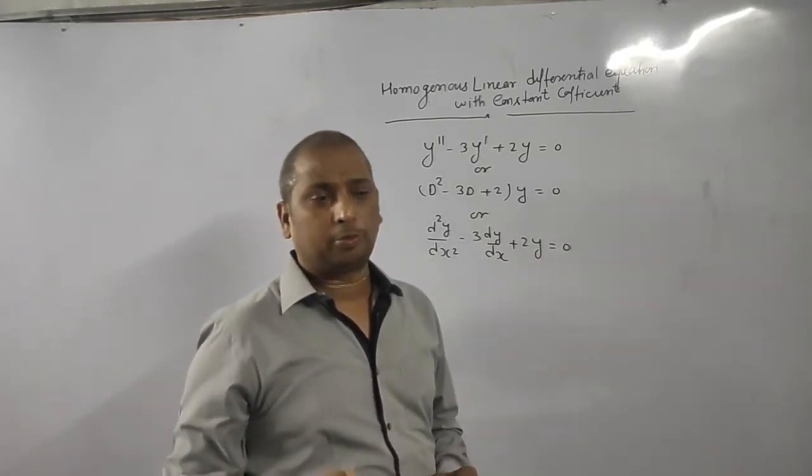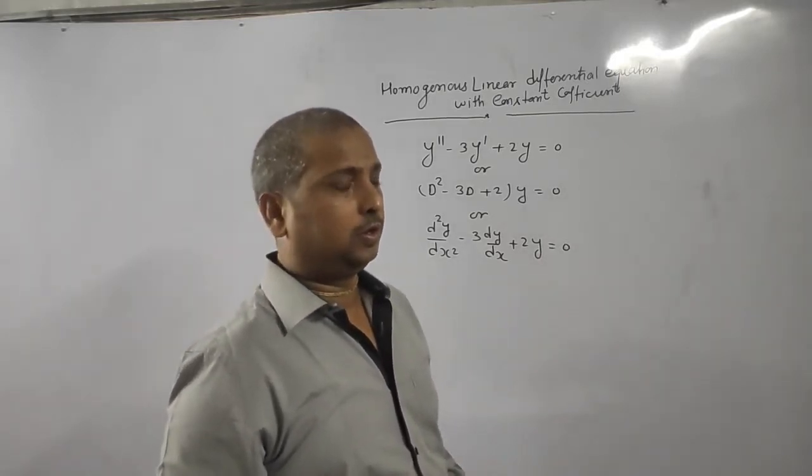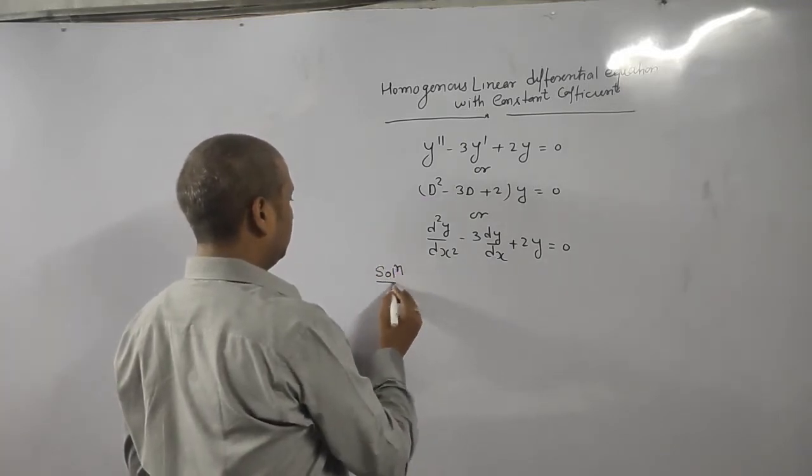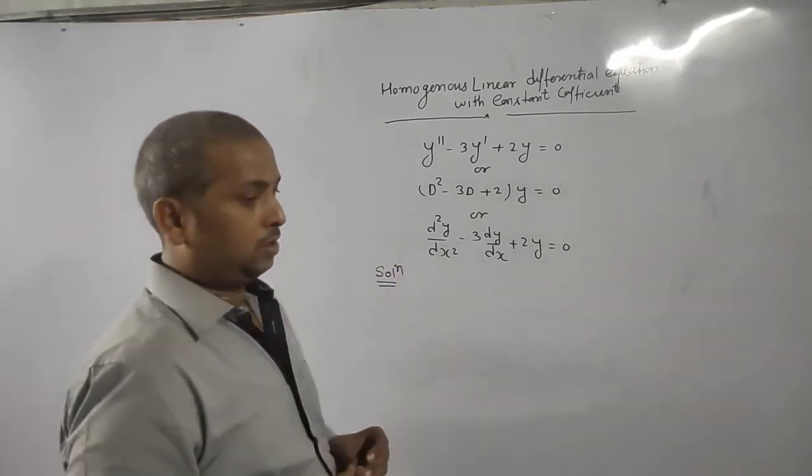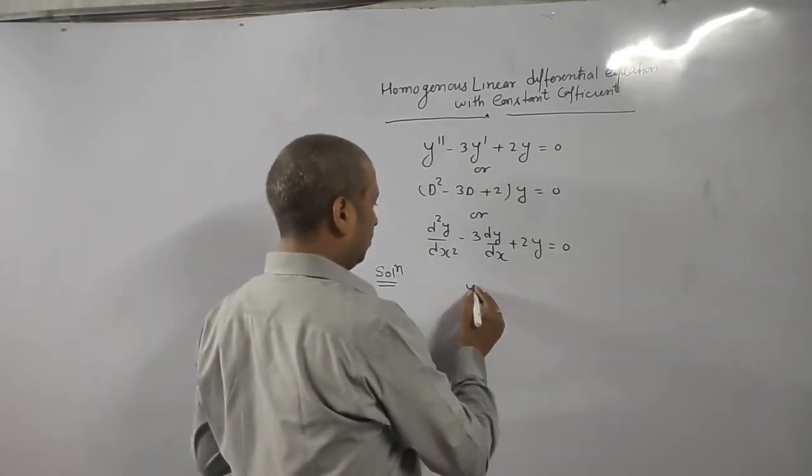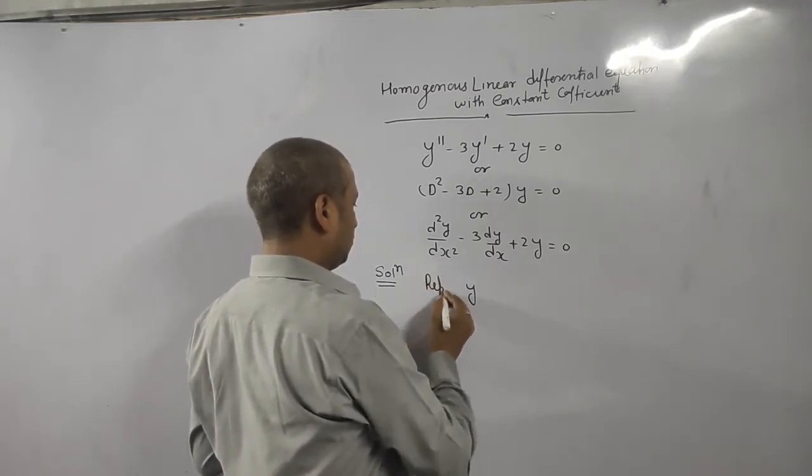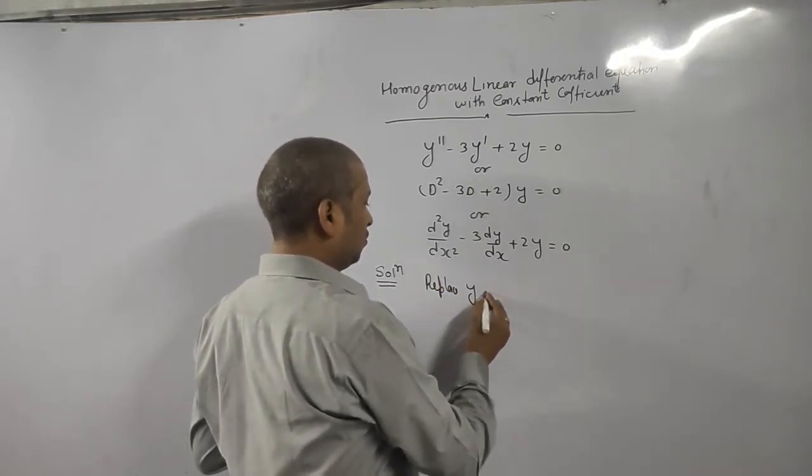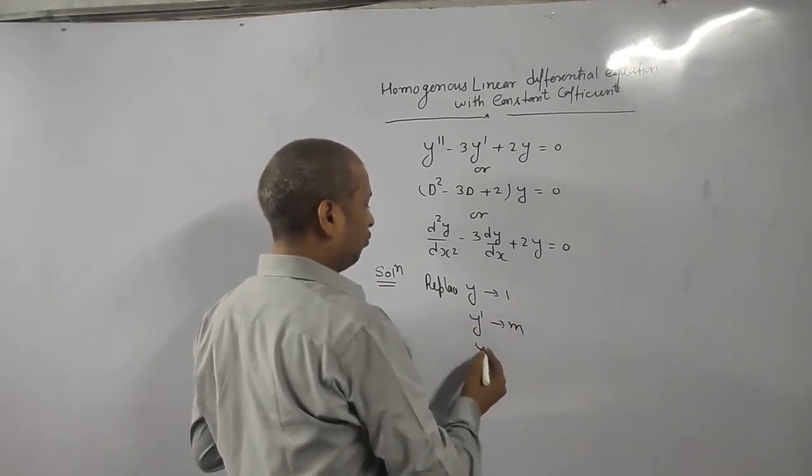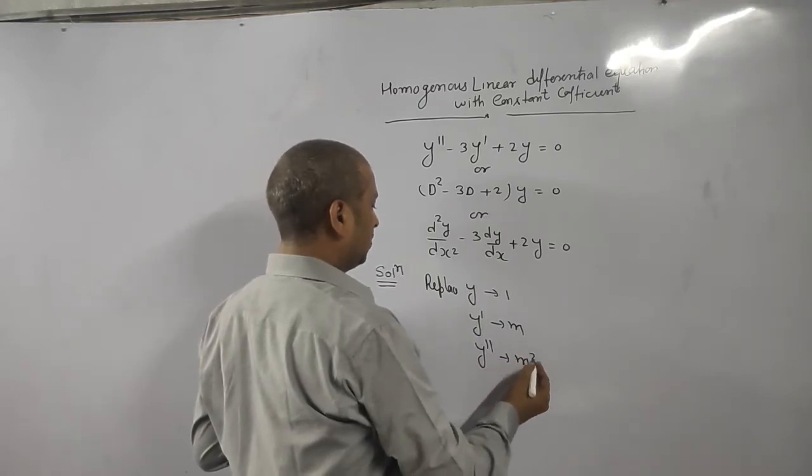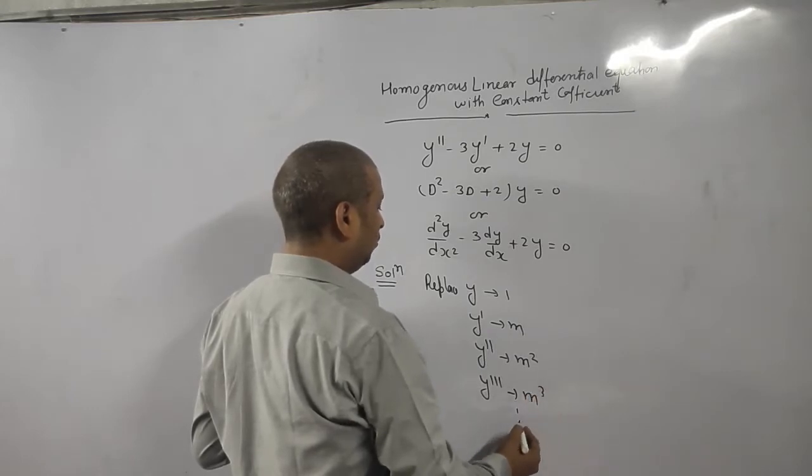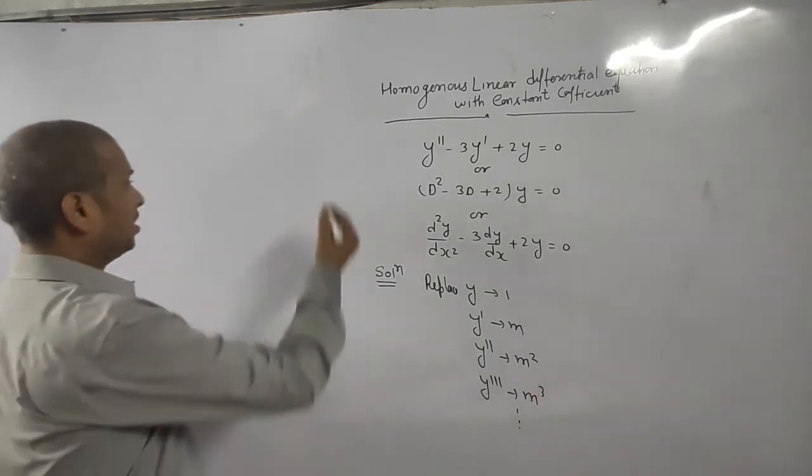Now I will explain you what is the procedure and how we solve. The procedure is very simple. First step: replace y by 1, y dash by m, y double dash by m square, y triple dash by m cube, and so on. Just replace.